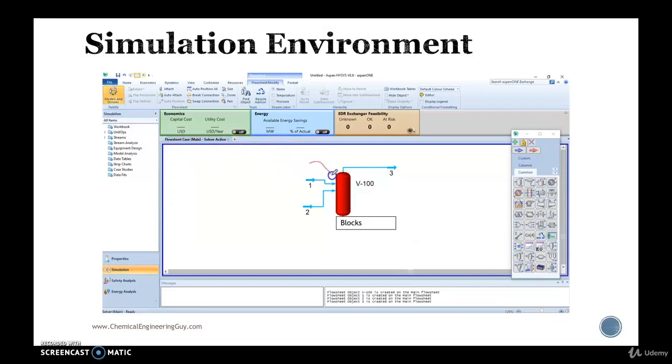Inside the flowsheet you can find blocks, which are essentially unit operations that you find right here, and streams, which are either material streams—these product inlets—or energy streams.